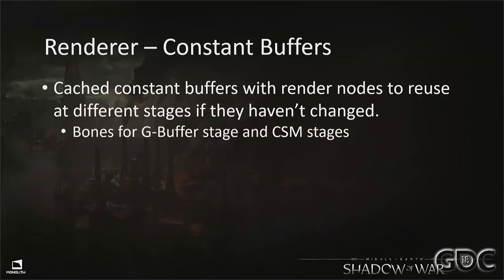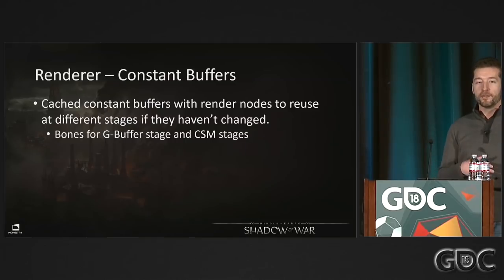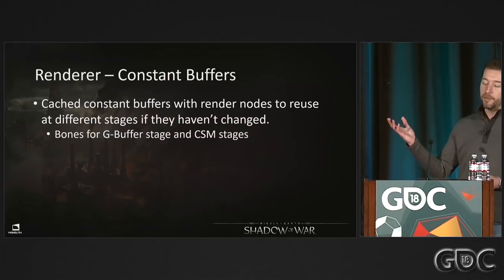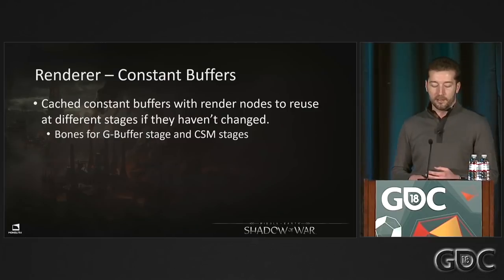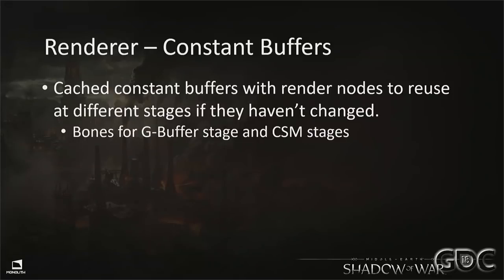For bones specifically, we now cache our constant buffers with our render nodes. If a character's bones are encountered in different render stages and they haven't changed, we just reuse the constant buffer built in the previous stage. So bones built during the G-buffer pass are reused in all three cascading shadow map stages — no need to rebuild from scratch every time.